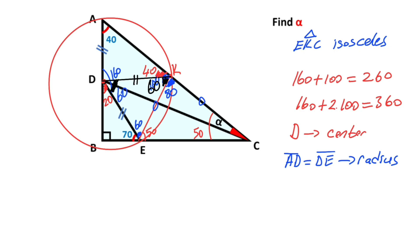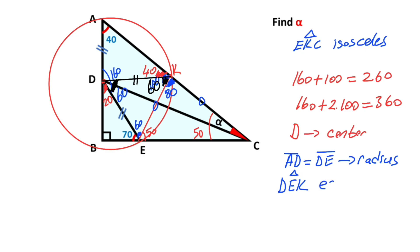Next step, angle EDK is also 60 degrees. Therefore this triangle has become an equilateral triangle — that means triangle DEK is an equilateral triangle.